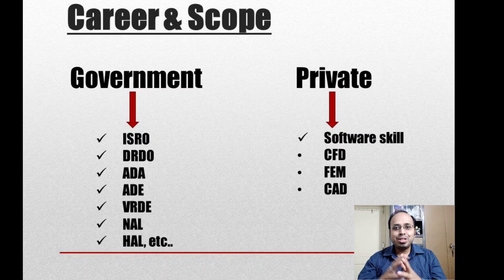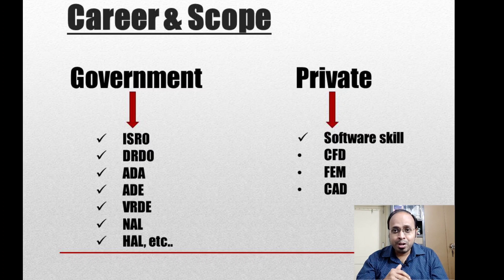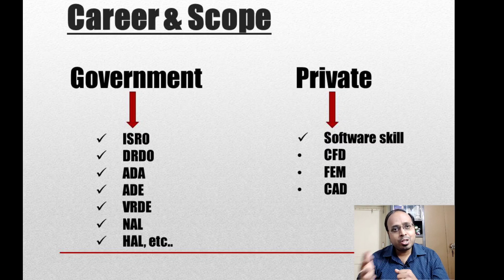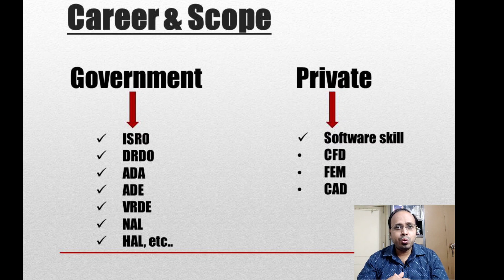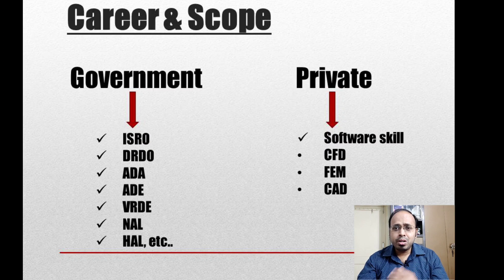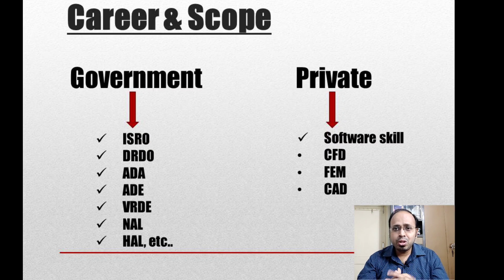Career and scope is a very important topic because students frequently ask about placement after a B.Tech degree in aeronautical and aerospace engineering. After completing your B.Tech, you can find both government and private options. In the government sector in India, there are big organizations like ISRO, DRDO, ADA, ADE, VRDE, NAL, and HAL. Every year there are vacancies, but there is a process — written exams and interviews — that you need to go through to get a government job.